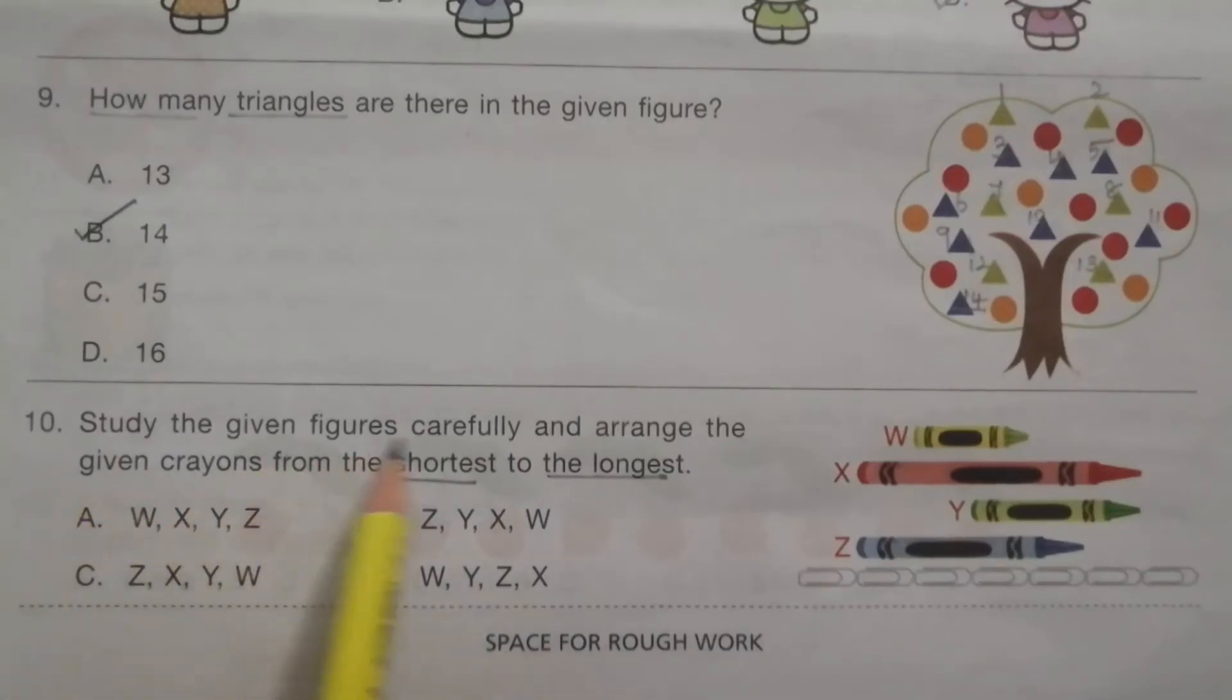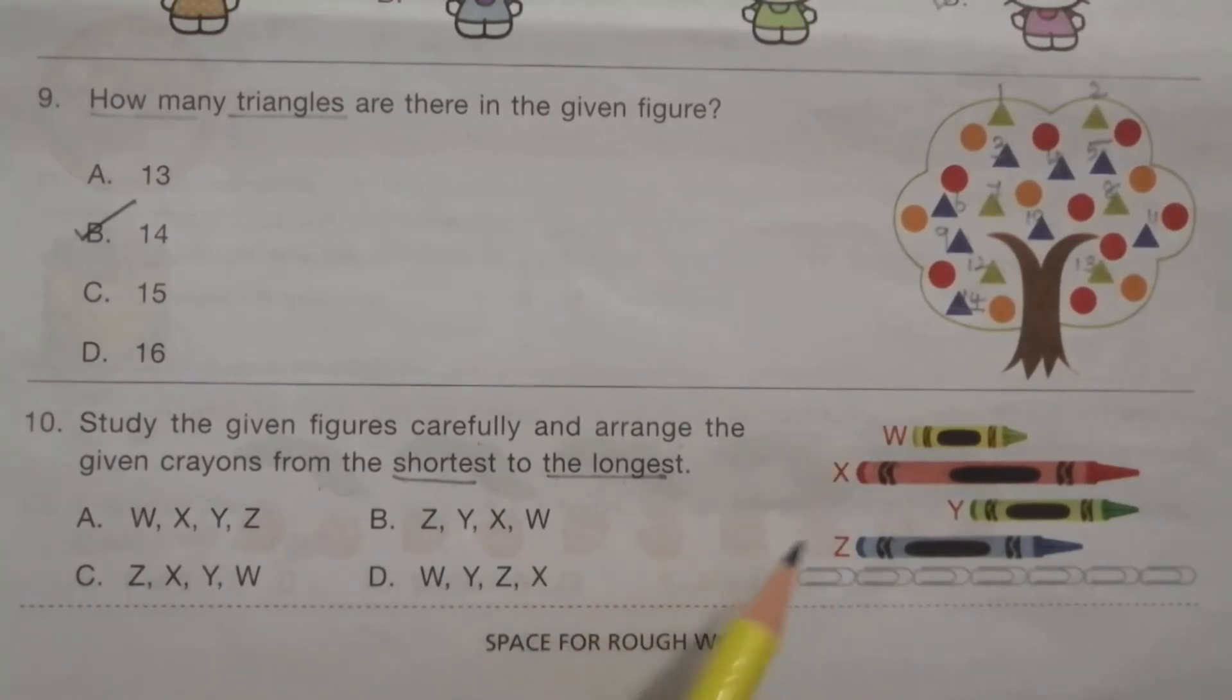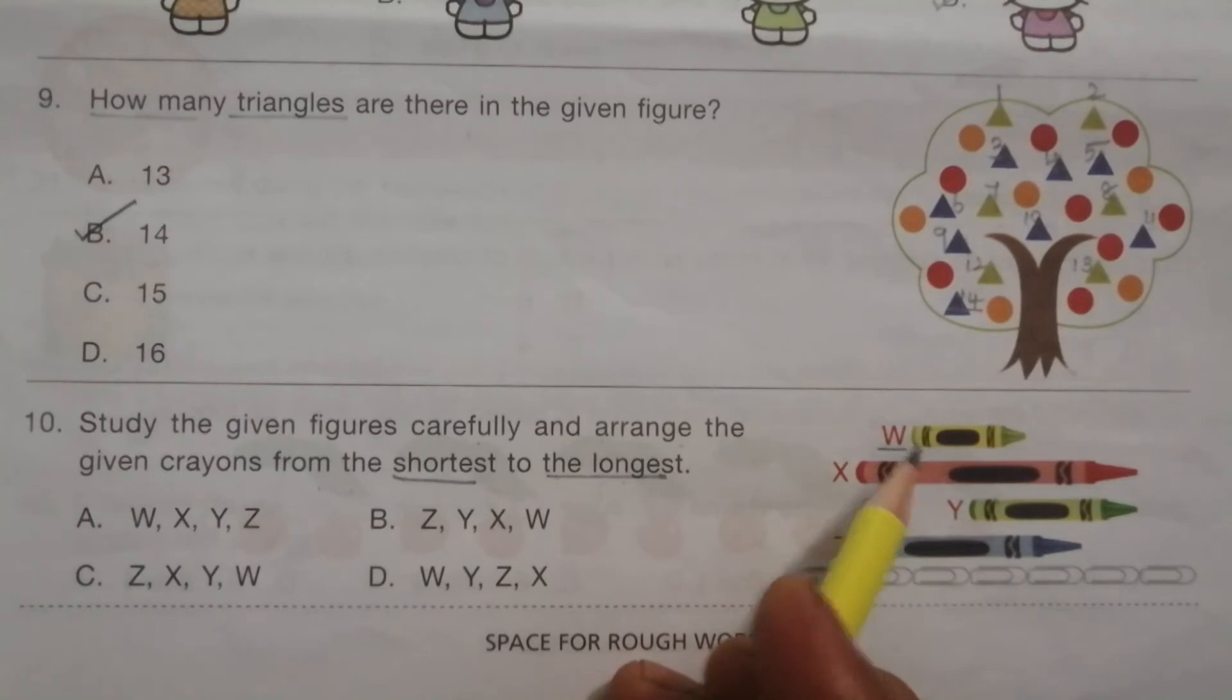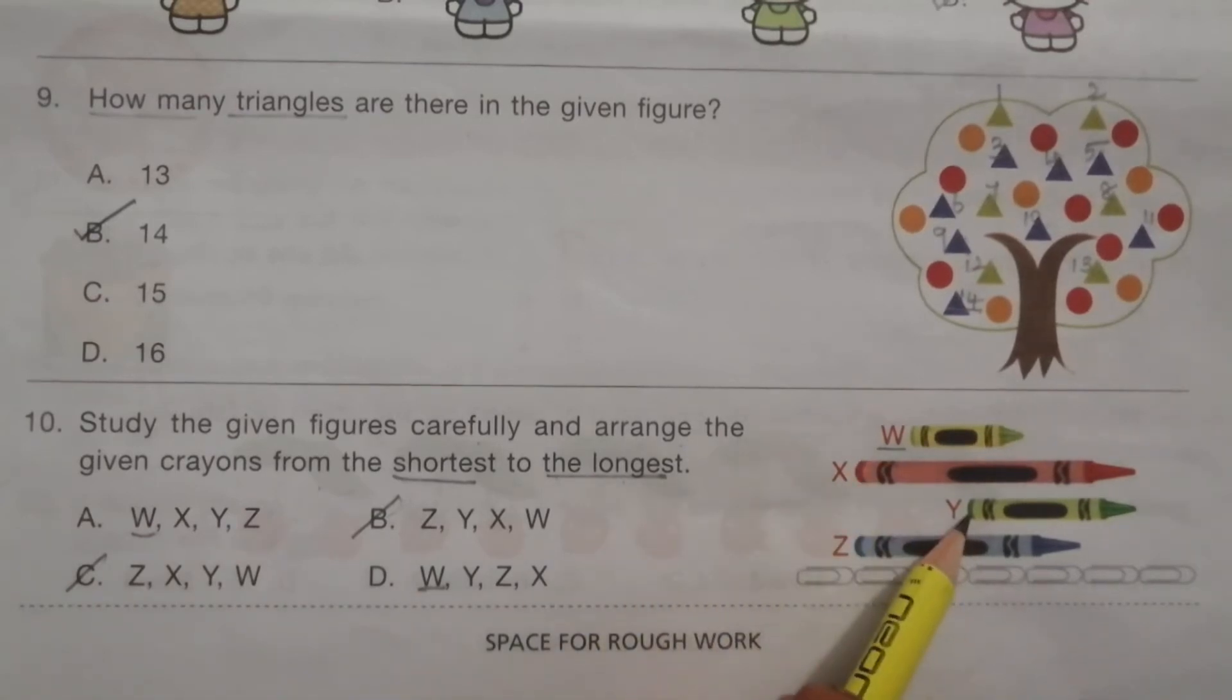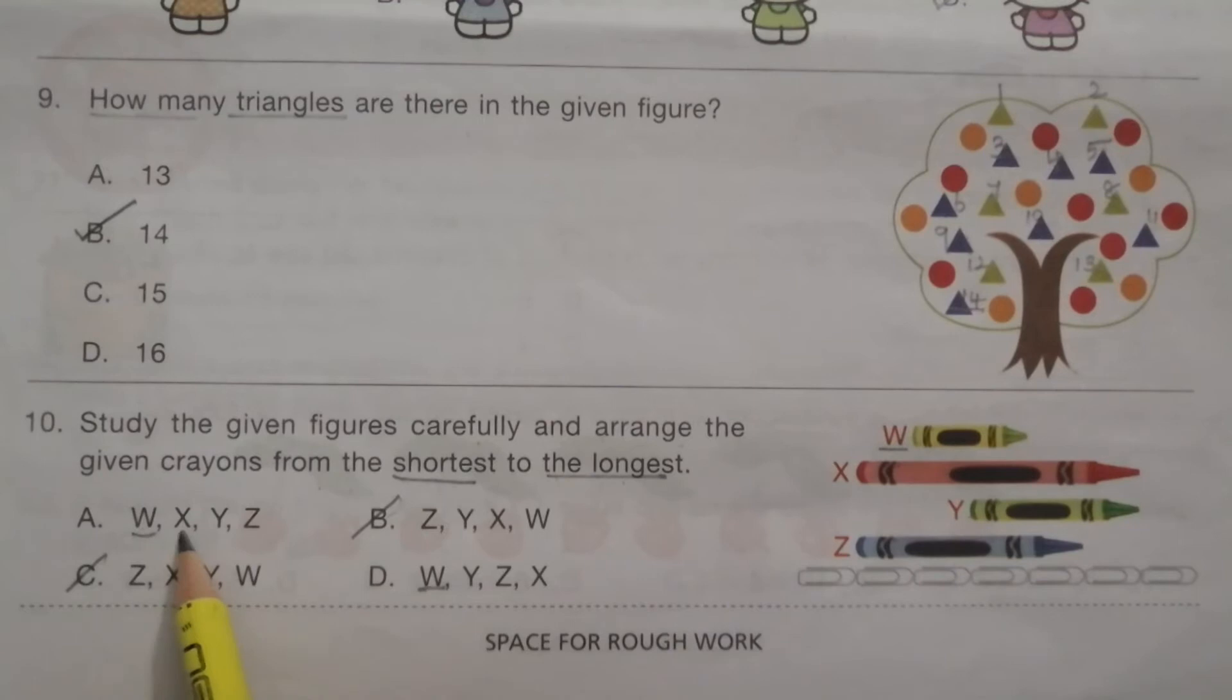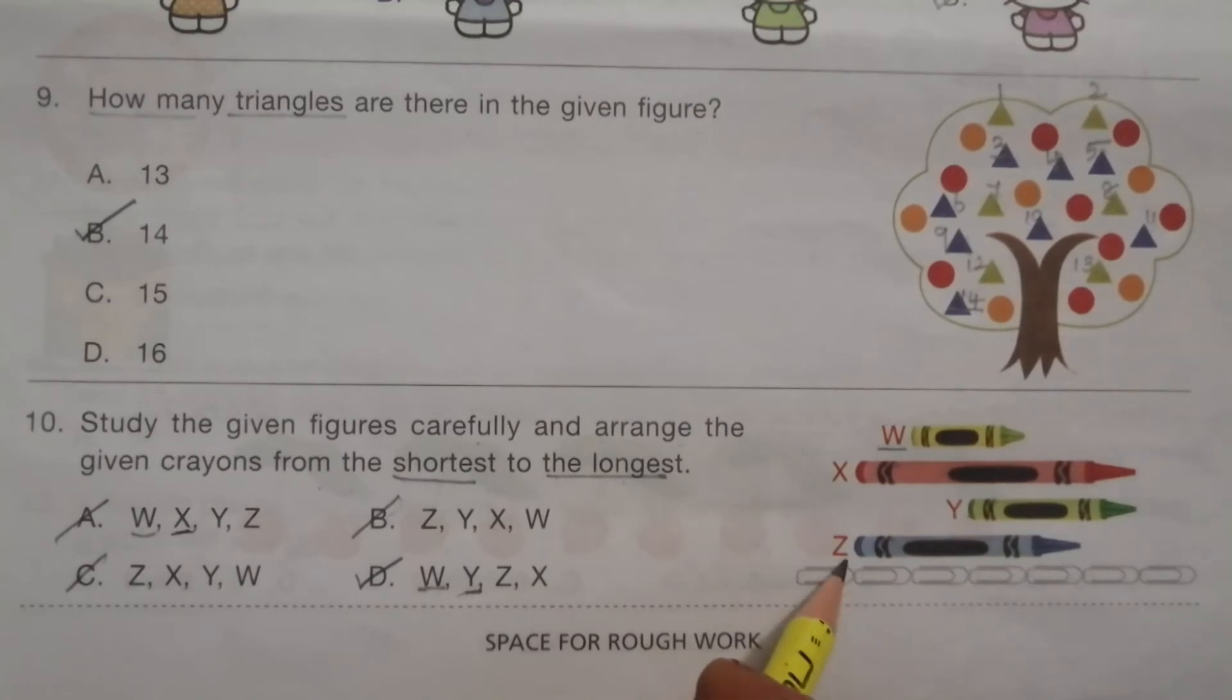Problem 10: Study the given figures carefully and arrange the given crayons from shortest to longest. In this figure, the shortest one is W. So first is W. Second shortest is Y: W, Y. Here X is given so A is not the answer. In D, yes Y is here. Next shortest is Z, yes Z is here. Next one is X. So D is the answer.